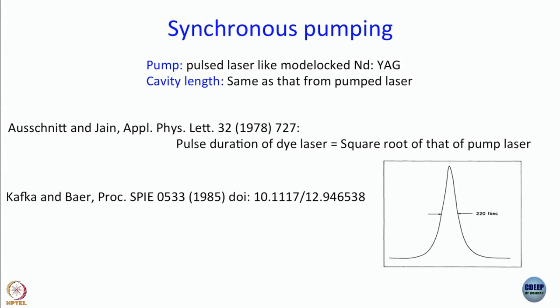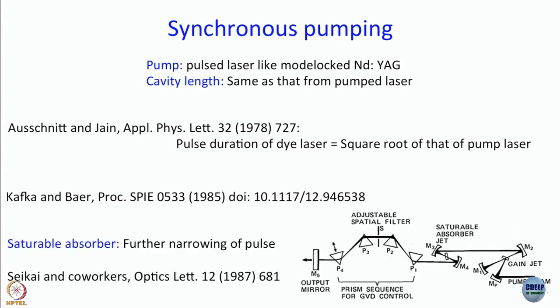Later on, they modified the cavity a little bit. This optics letters paper is from Spectra-Physics. Let us look at the cavity carefully. We can right away see some elements we have discussed earlier — our familiar four prisms, which give tunability. Here is the output coupler, the partially reflecting beam through which the light will go out, and at the other end will be the high reflector.